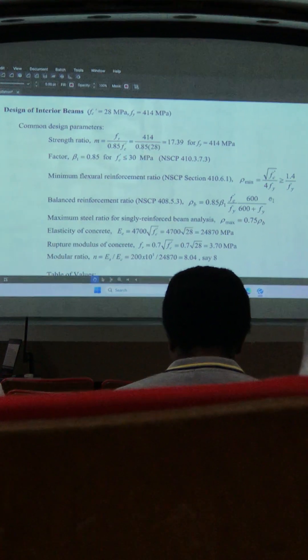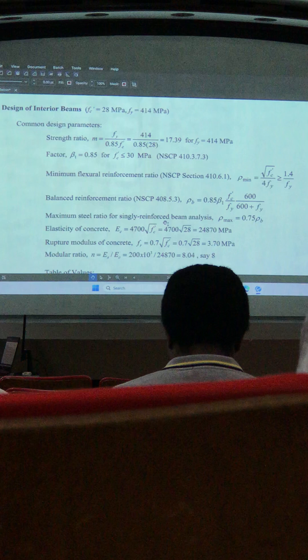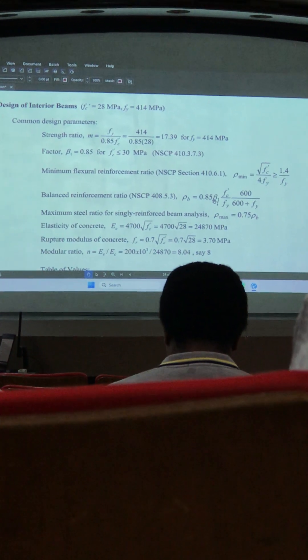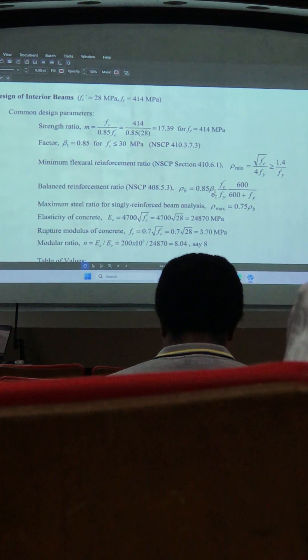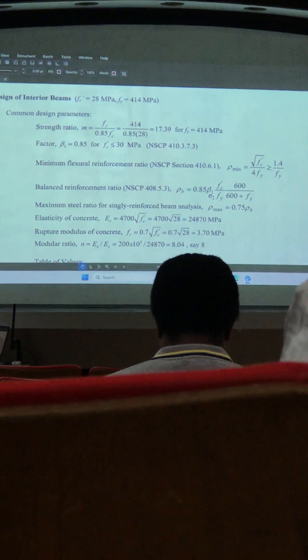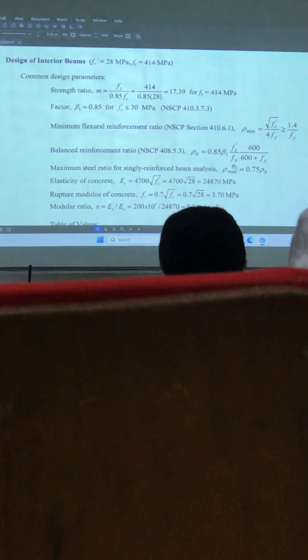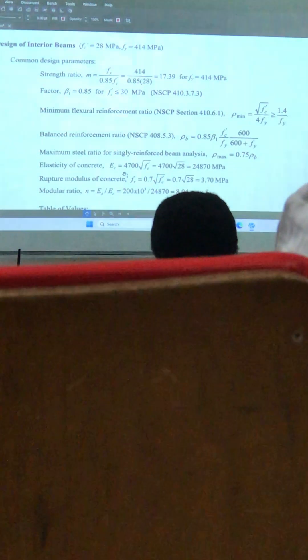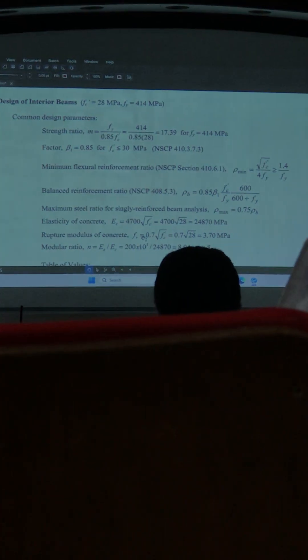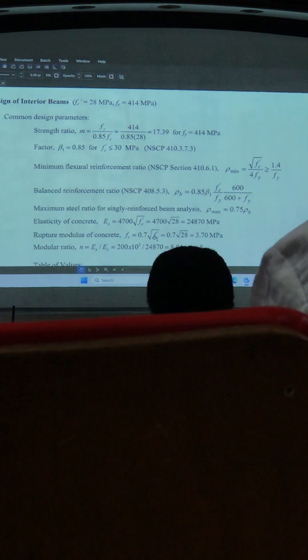Then we have here requirement for row min, row balanced. We have row max, which is 0.75 row balanced. Then the critical formula for the modulus of elasticity of concrete, so 0.7 times the square root of FC'. Then the rupture modulus of concrete, or the tensile strength of concrete.